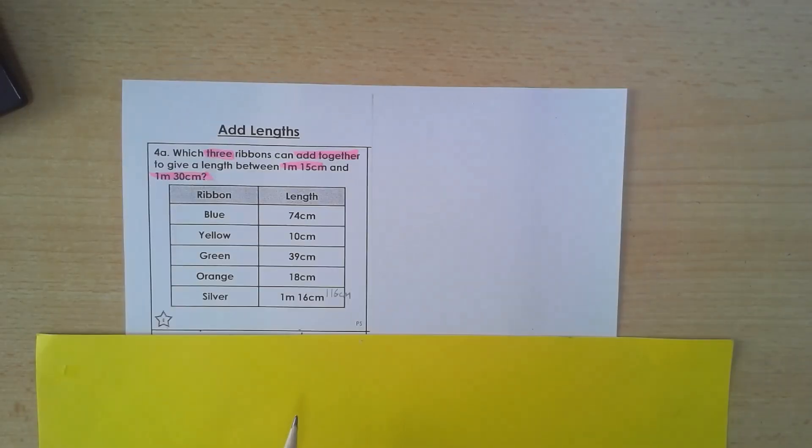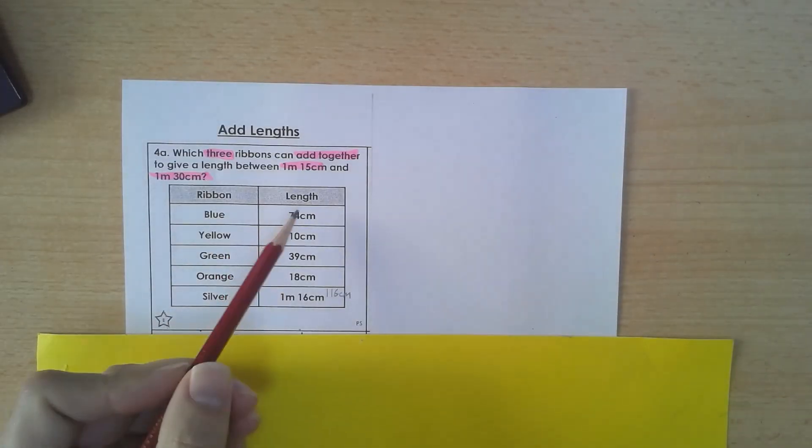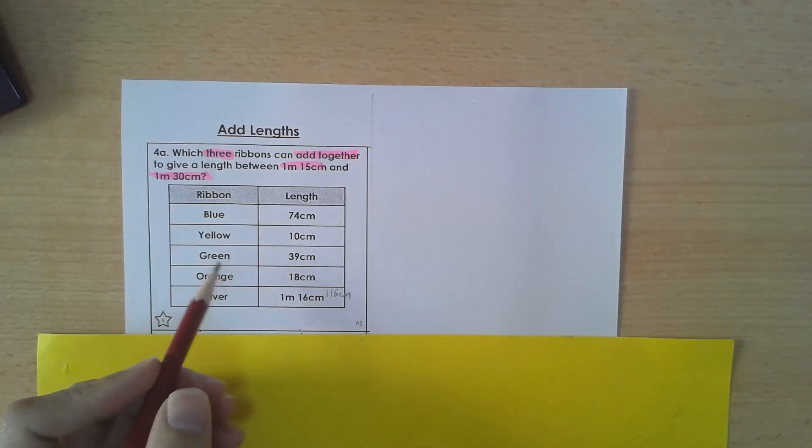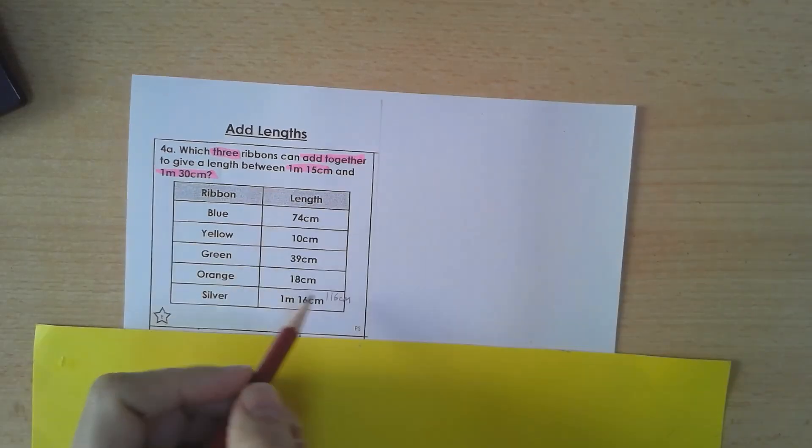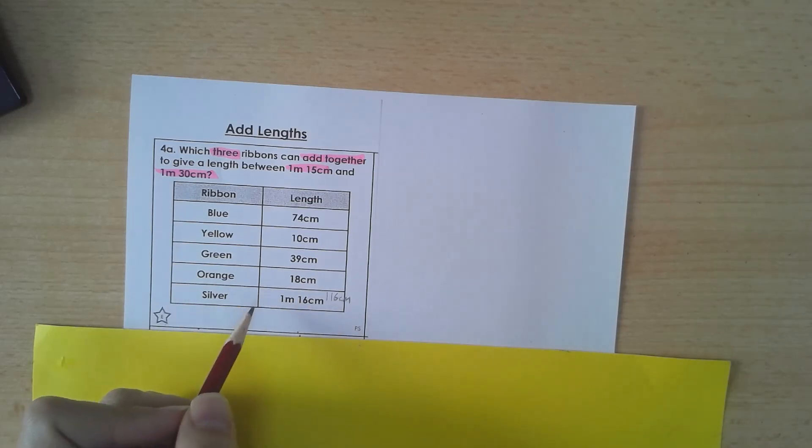So here we have to do a little bit of estimating to see which ribbons might work, and just look at the three lengths at the top here, which are blue, yellow and green. I'm going to give them a go and see, because they look pretty good. Silver looks a little long for me, but we'll see here.